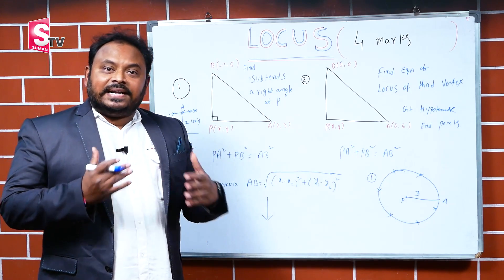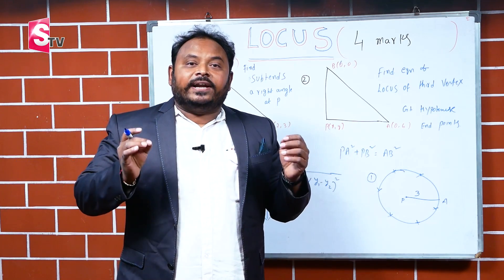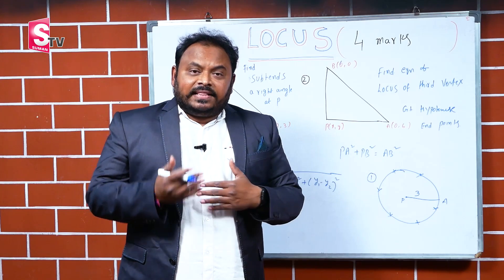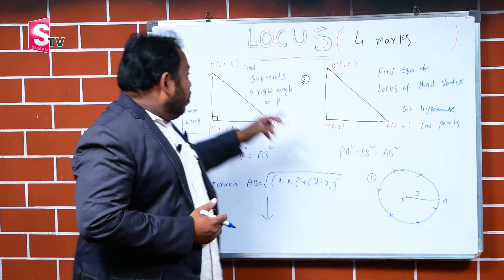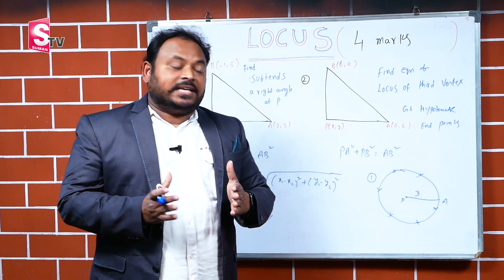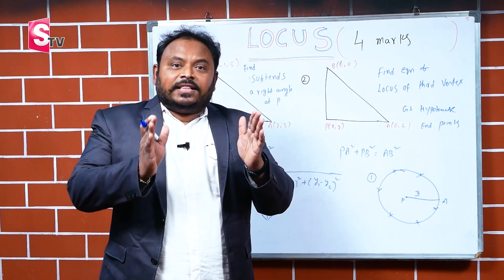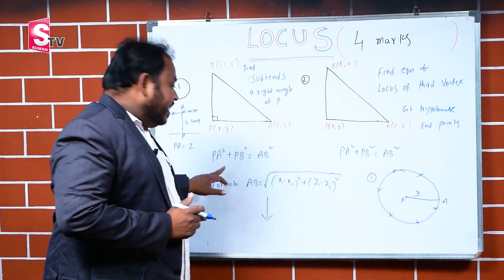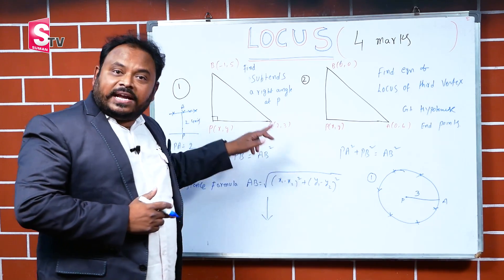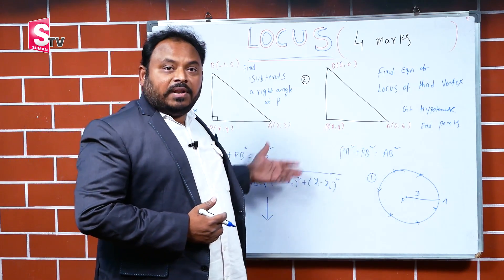You have to present this problem as: let P(x, y) be any point on the locus — for this they will give one mark. After that, write the geometrical condition according to the data. And given the geometrical condition, then substitute the two values to get the answer. This is the main content in these two problems.